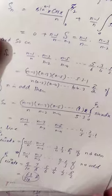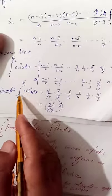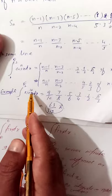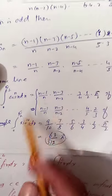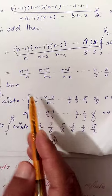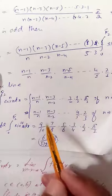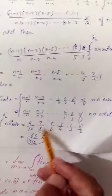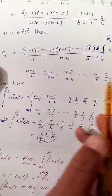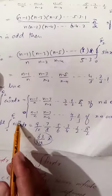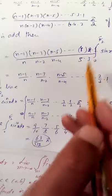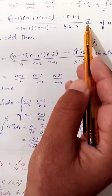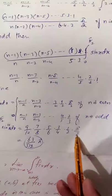For example, to find ∫₀^(π/2) sin¹⁰x dx using the above formula, we put n = 10. The product becomes (9/10)(7/8)(5/6)(3/4)(1/2), and since n is even, we multiply by π/2, giving us the required answer.